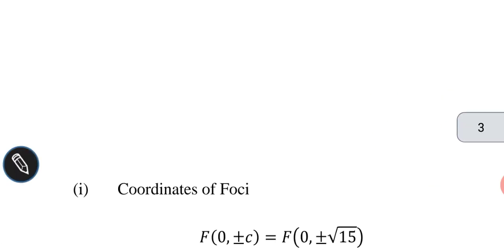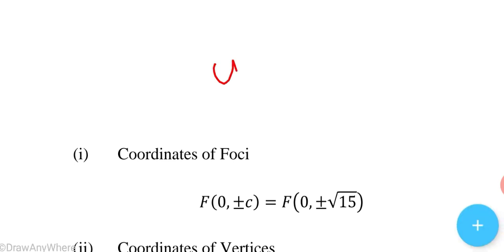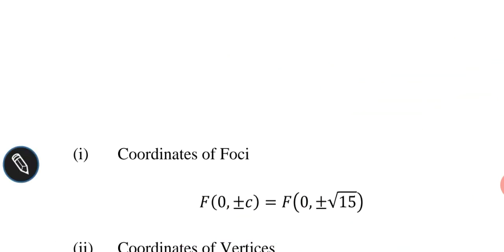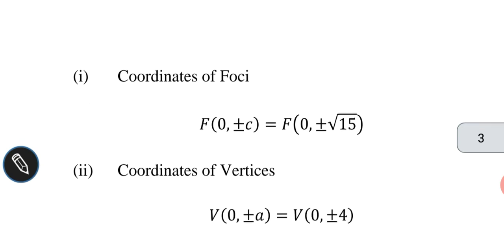Now we find the coordinates of the foci. Since the major axis lies along the y-axis, the x-coordinate is 0. The coordinates of the foci are F(0, ±c) = F(0, ±√15).